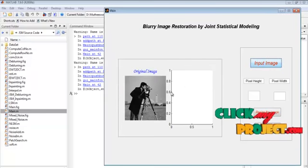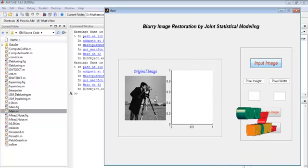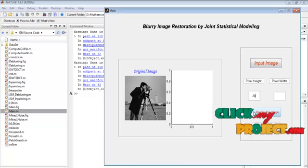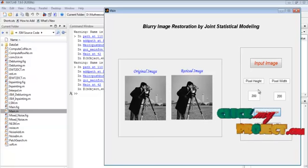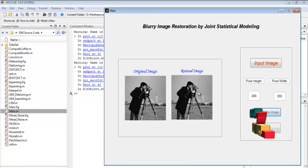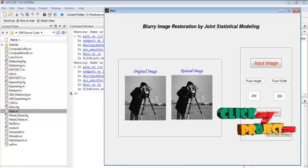Select any one image from the dataset folder. I display that input image in the axis one plot. Now you can change the pixel height and pixel width. Now resize the input image with the mentioned dimensions. This is the resized image displayed in the axis two plot.